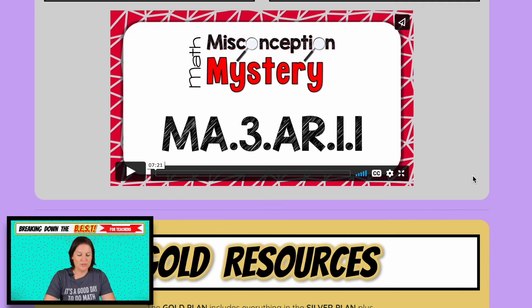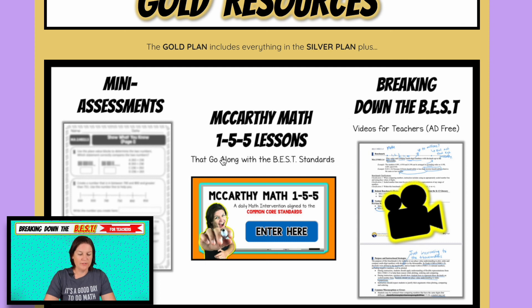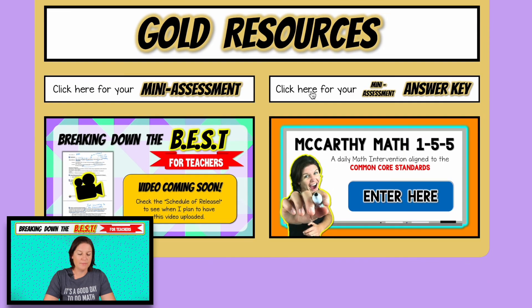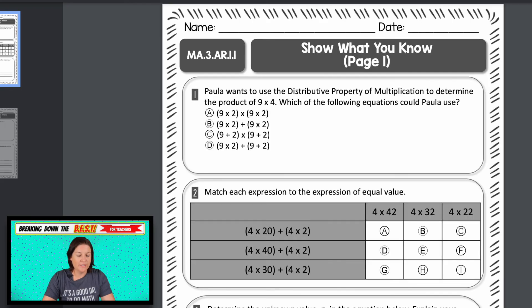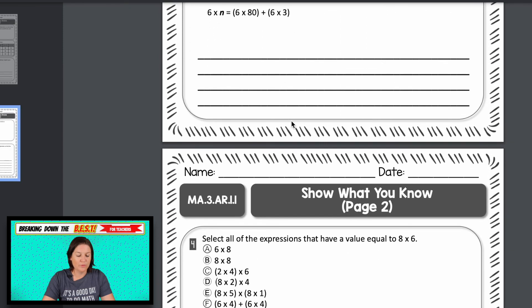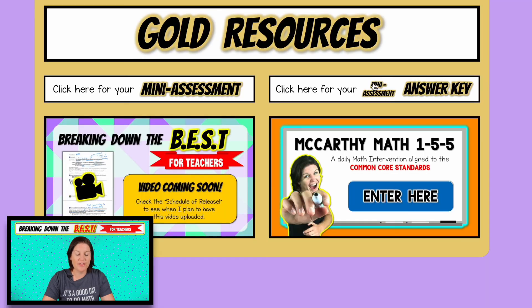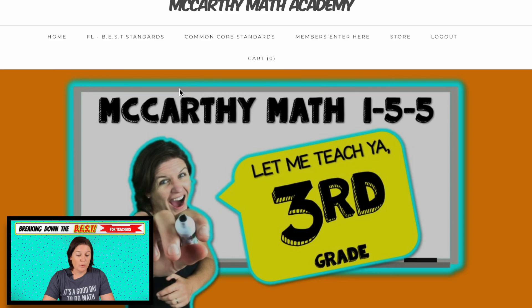For the gold resources you have, let me go here. You can go back to your bronze and your silver at any time, but you have a mini assessment. You've got your answer key. You've got this ad free version that you're watching right now of breaking down the best and you have McCarthy math one five five. I'm going to click on the mini assessment. So you can quickly see the variety of questions that you have at your fingertips. You also have the answer key.